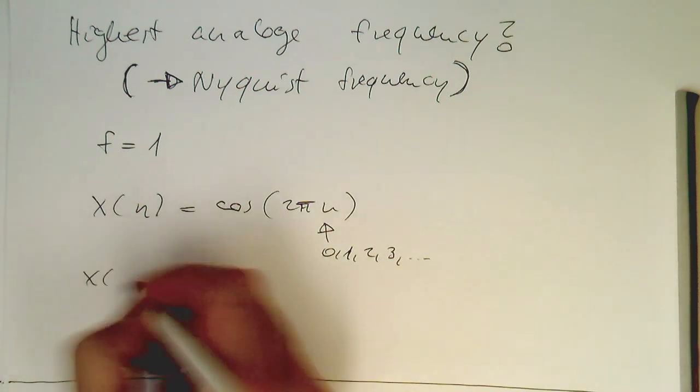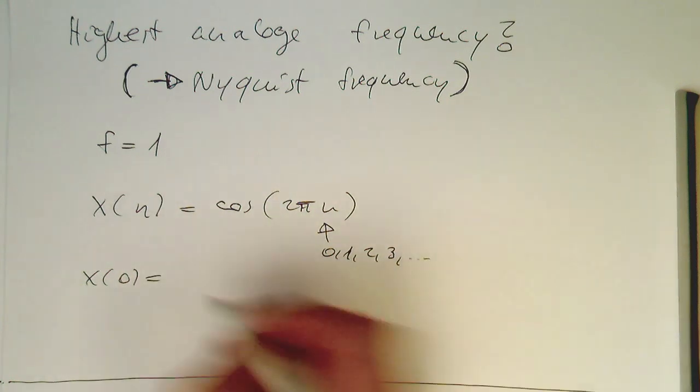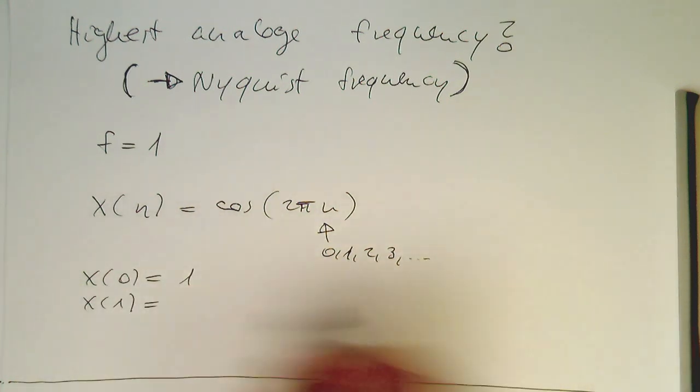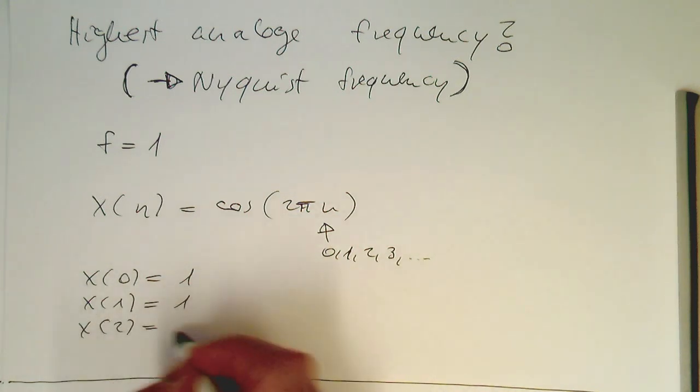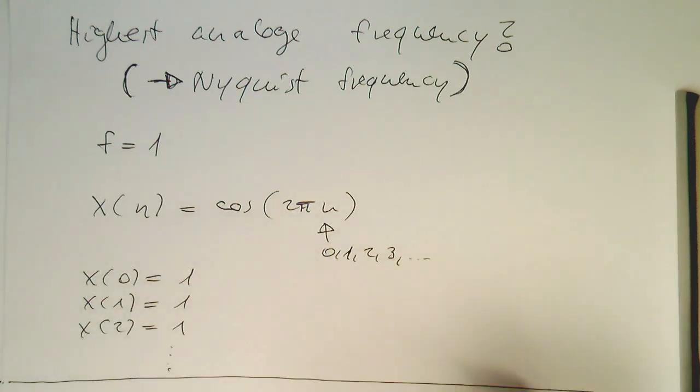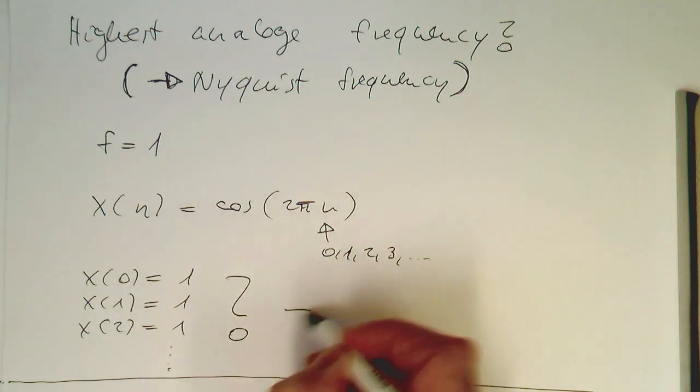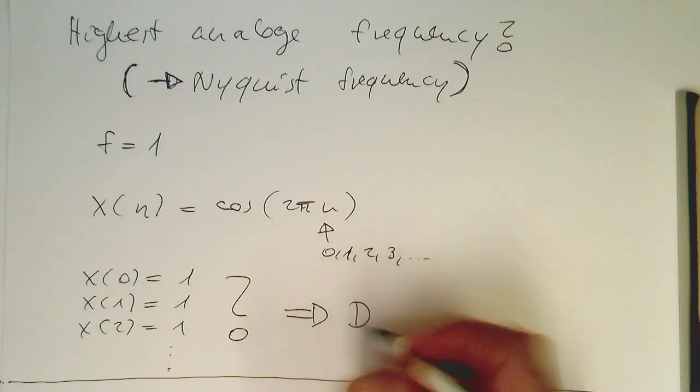And so the x of 0 is then obviously this is 1, x of 1 is also 1, x of 2 is also 1 and so on and so on. So in terms of signal, this is essentially a DC signal.